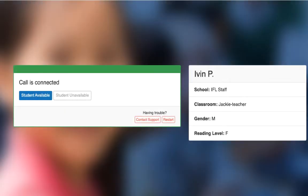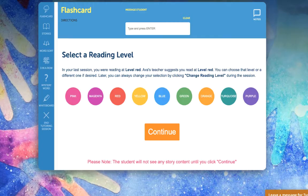If your pupil is present, click Student Available. This will advance you to the next screen where you can select the pupil's reading level.